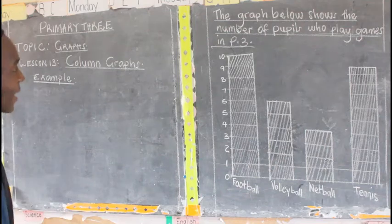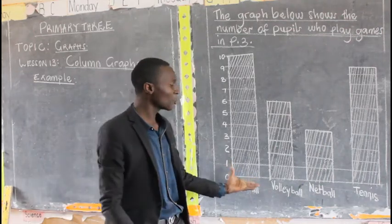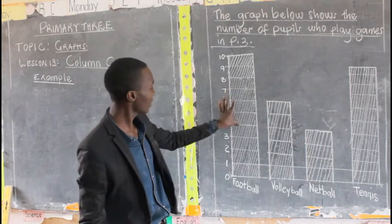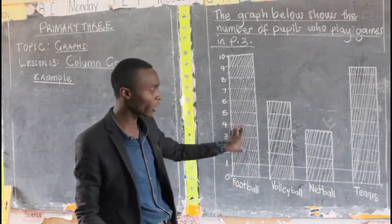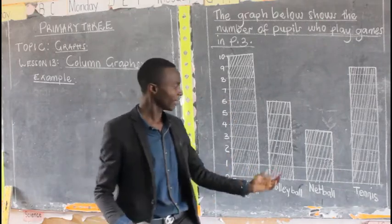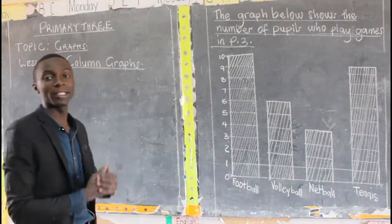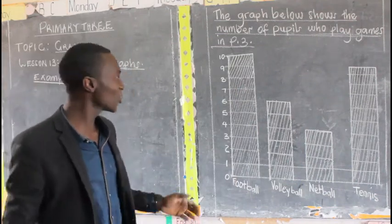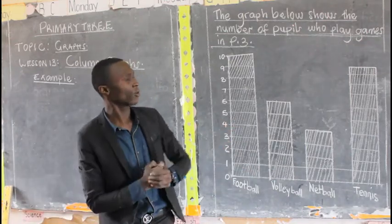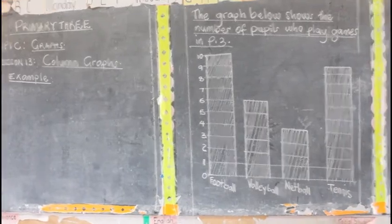Our example one is saying: the graph below shows the number of people who play games in primary three. This graph shows the number of people who play games in primary three. This column is for football — for those people who play football. This one is a column for those who play volleyball, this one is for netball, and the last one is for pupils who play tennis. We do have some questions that are asked about this column graph.